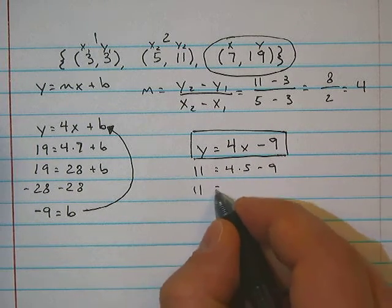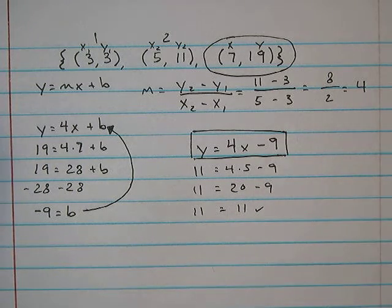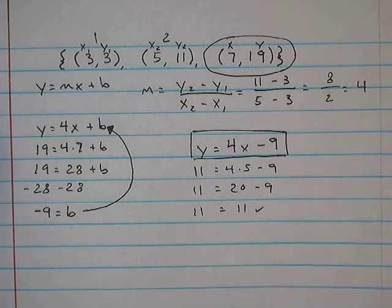So 11 is equal to 4 times 5 minus 9. So 11 is equal to 20 minus 9. So 11 is equal to 11. So we've got the right answer. So that's when given a list with three or even more points, it would look like that.